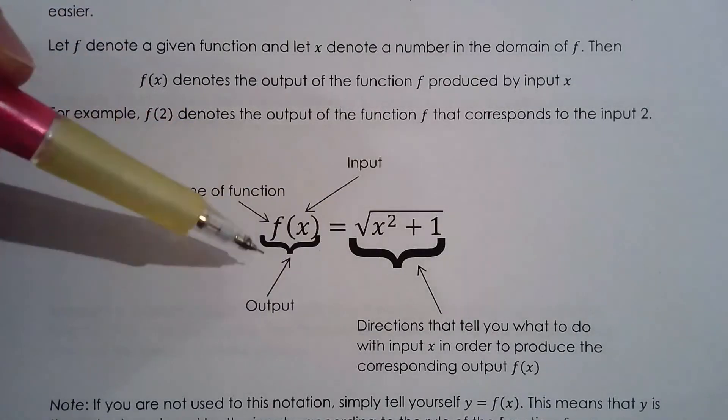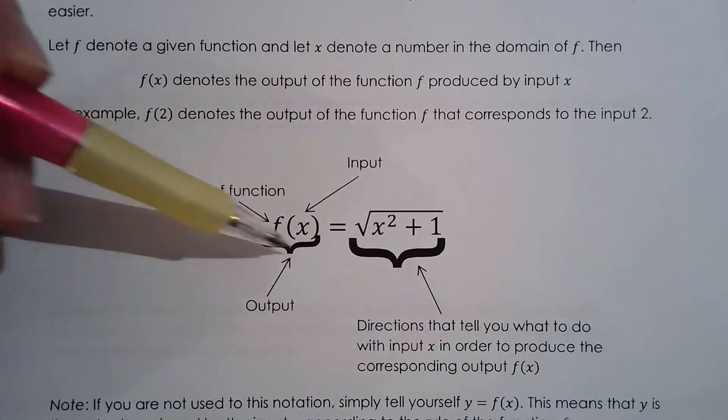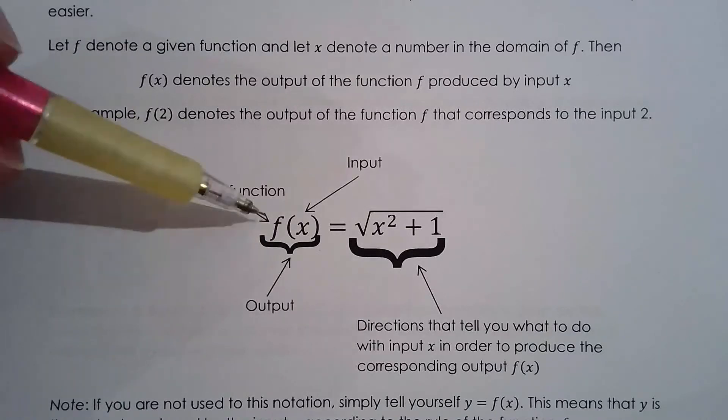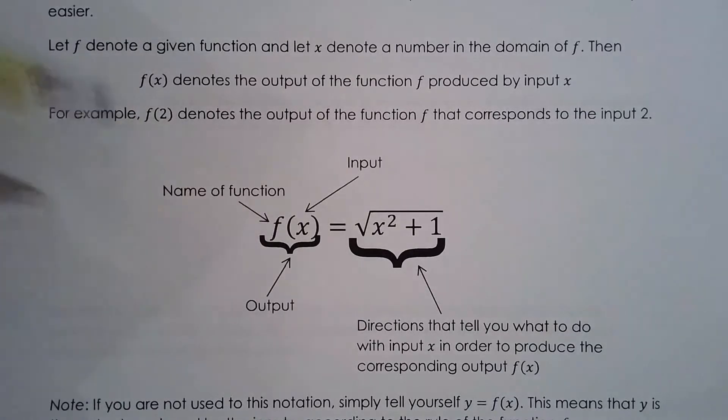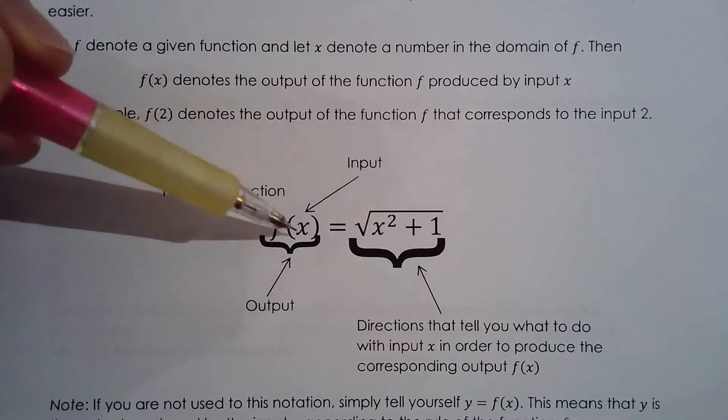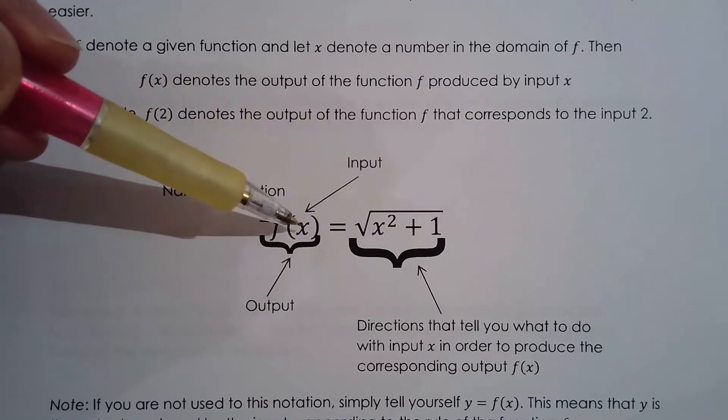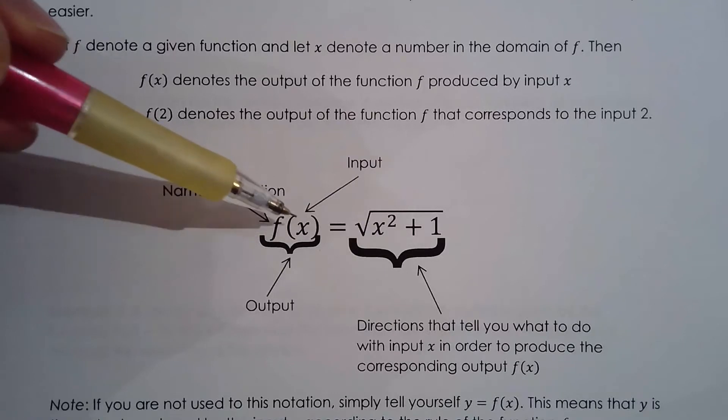And then it does something and then it spits it back out. So f of x, yes it's your y value, but it's also the output. And in this case we name the function f. You could call it g or h, but we usually like the letter f, you know, because f for function, why not.